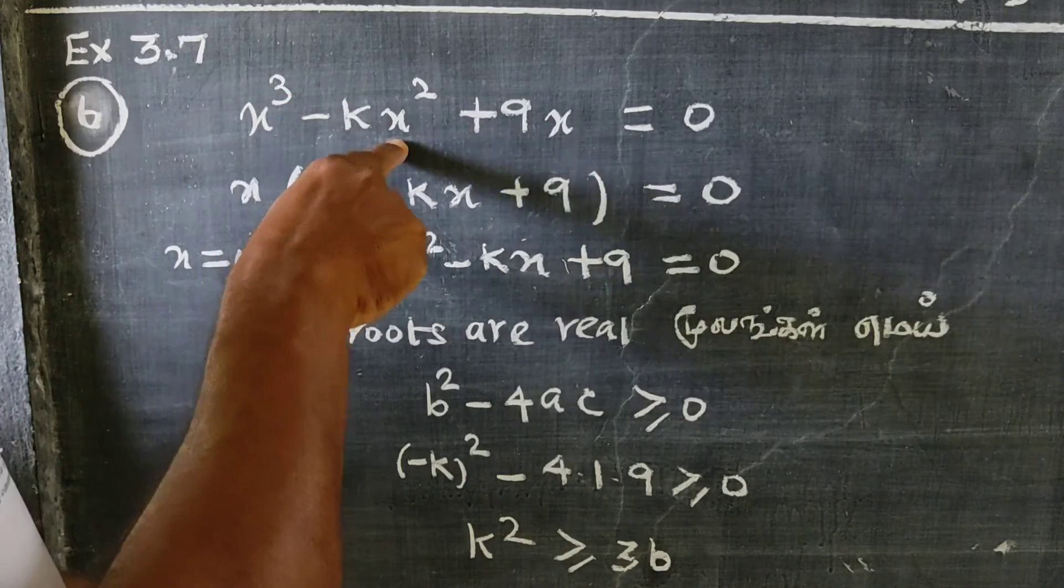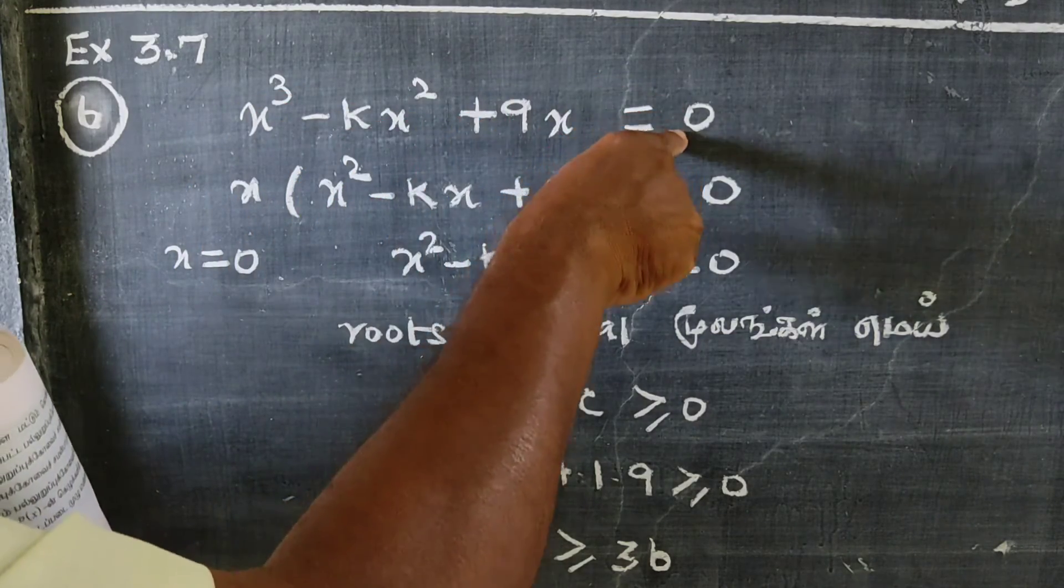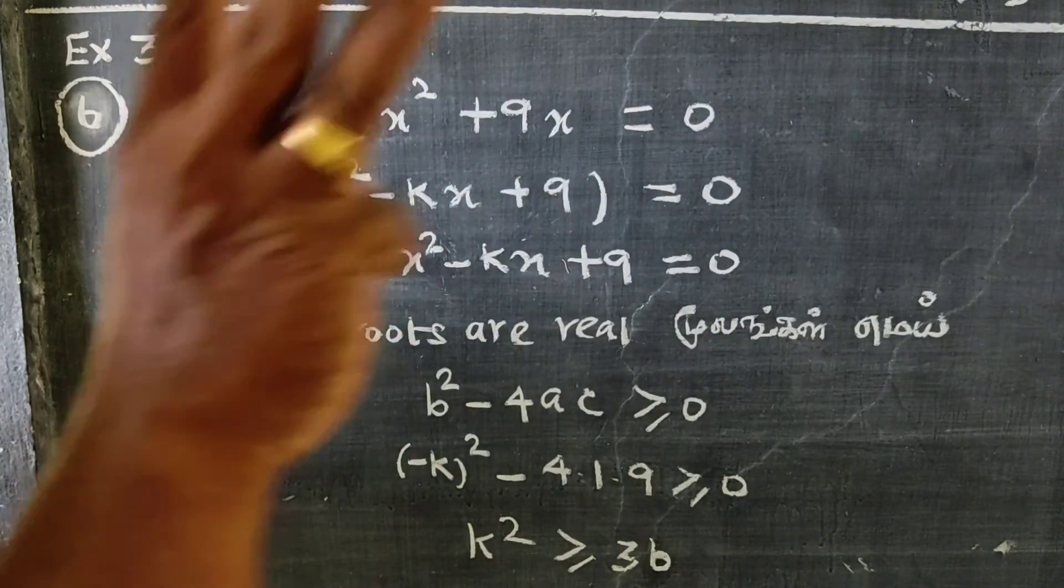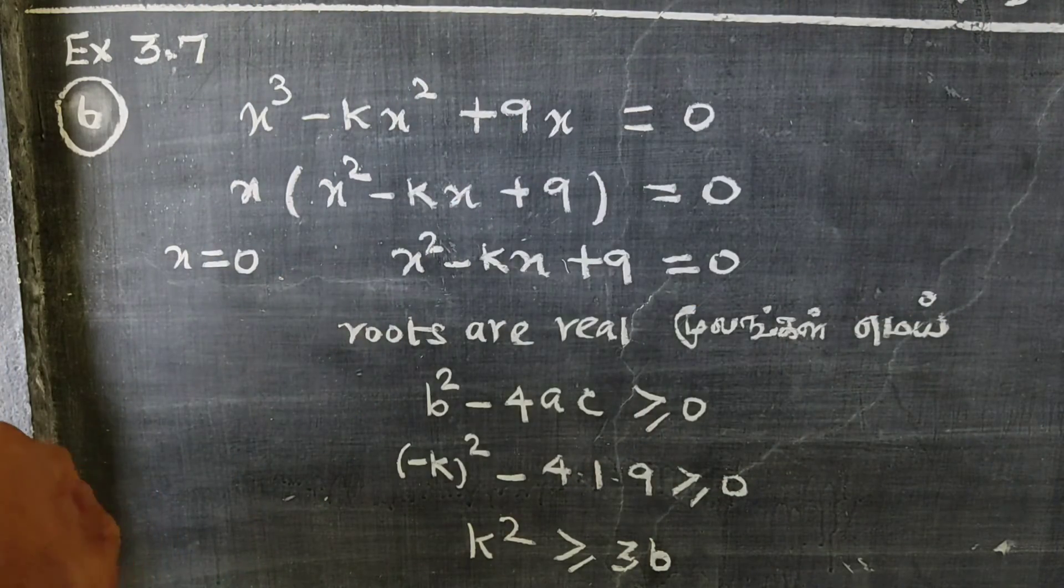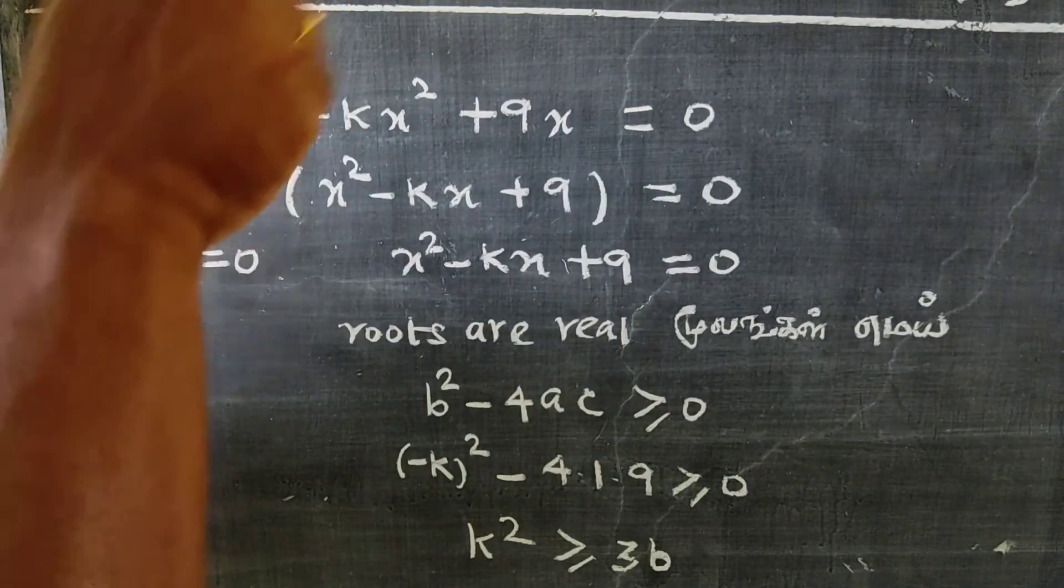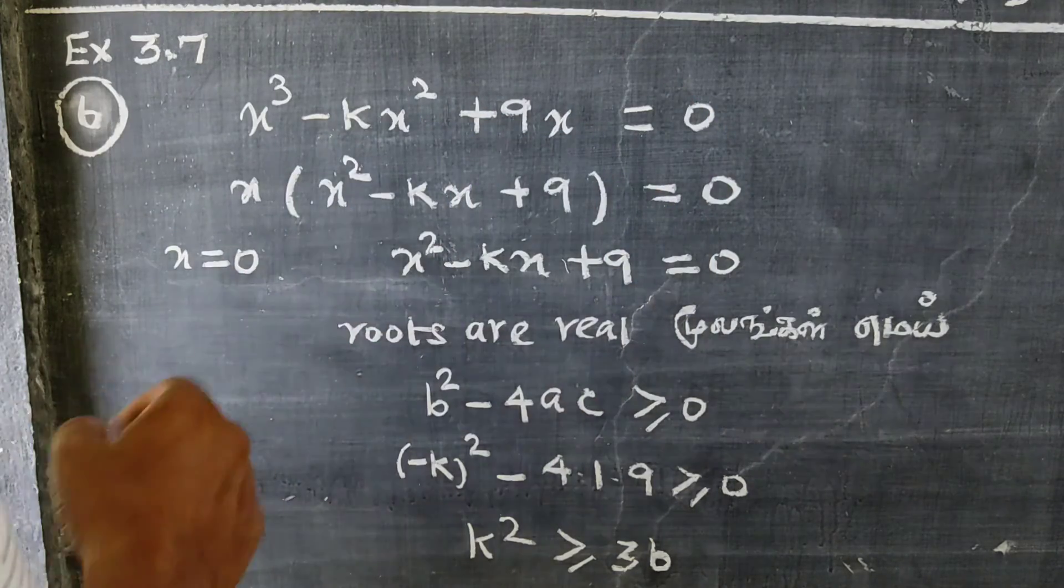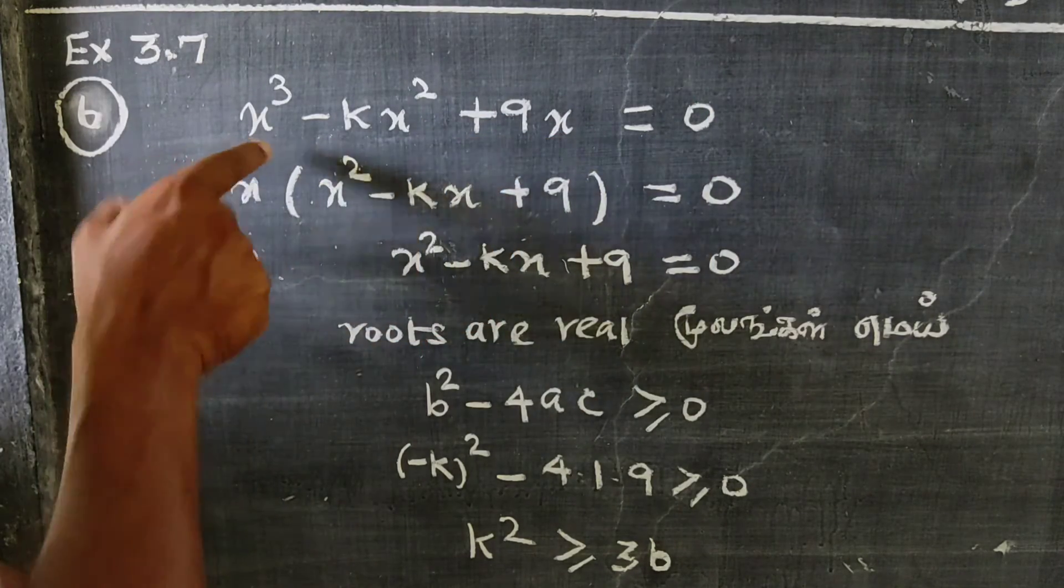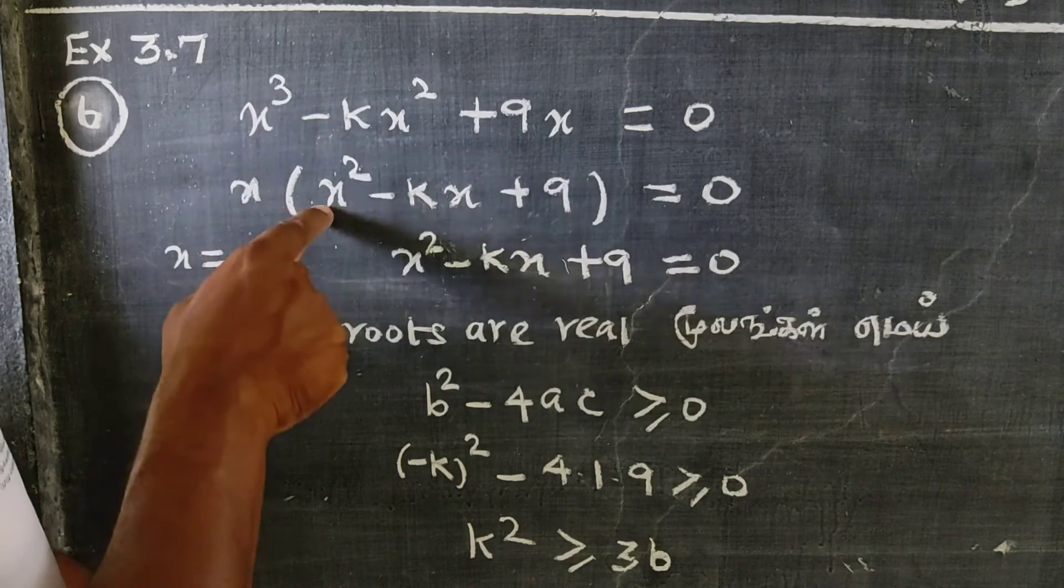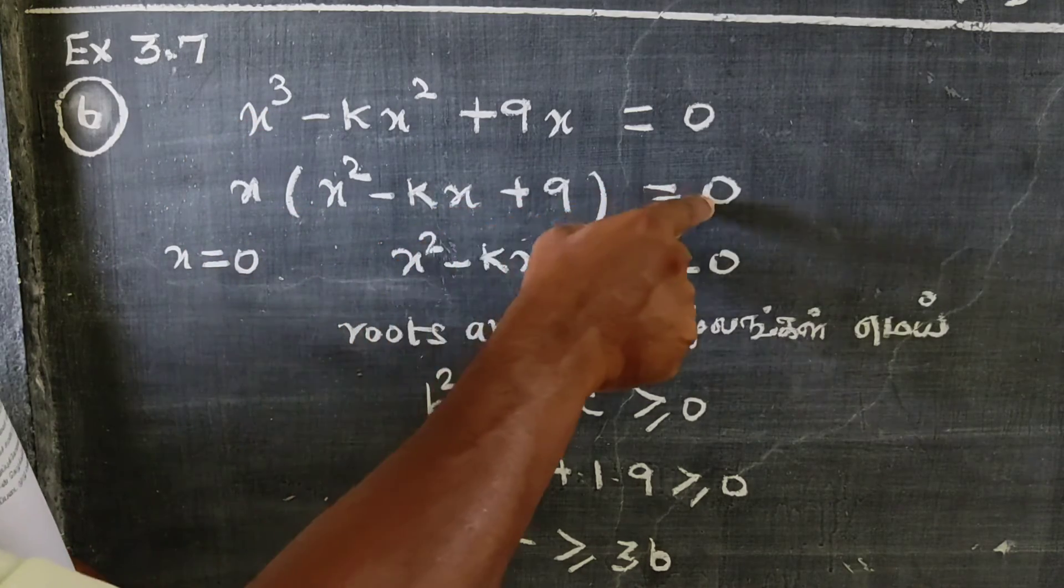x³ - kx² + 9x = 0. We need three zeros. Look at this - we see x in all terms. Factor out x: x = 0, then x² - kx + 9 = 0.